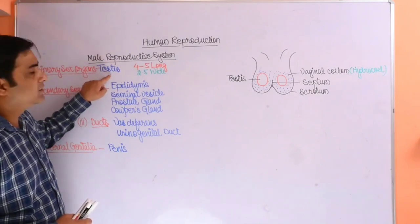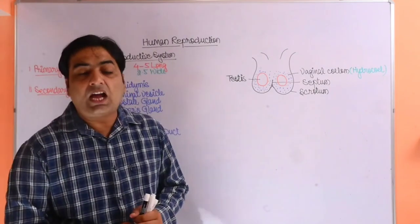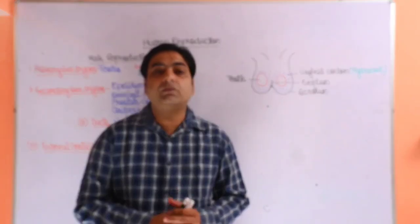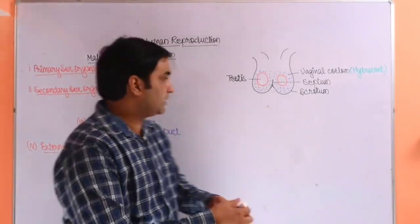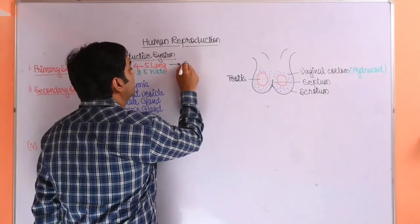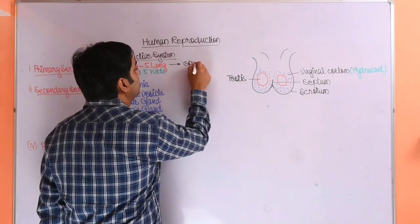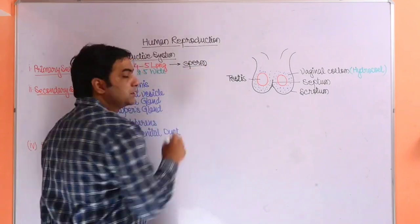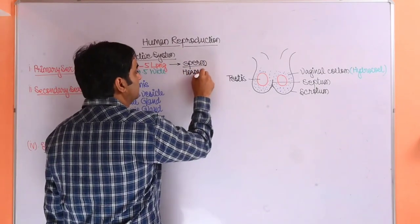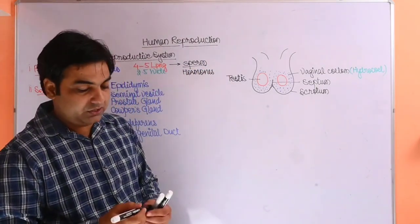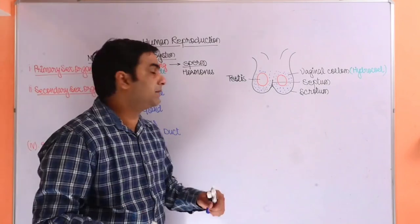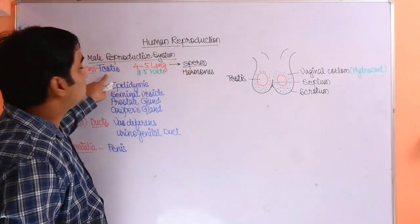Primary sex organ testes is an organ which is situated outside of the abdominal cavity of male. It is responsible for two types of secretions. The first function is it provides the male gamete which is called sperm. It also produces hormones, testosterone is an example which is responsible for the secondary sexual characters.